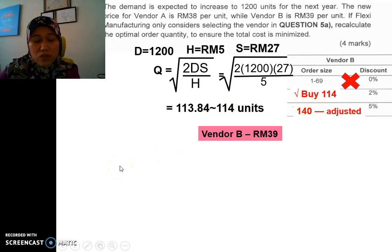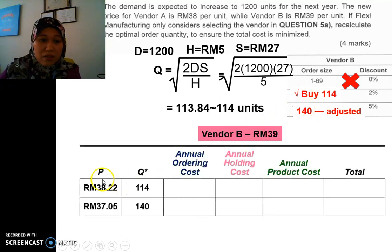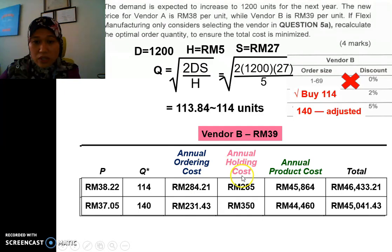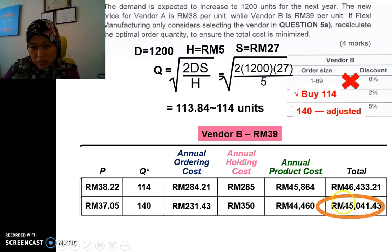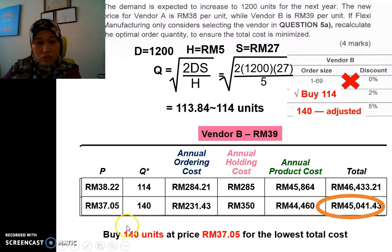And now I need to calculate the total cost for these two. Remember, we have changed the price to 39. So we need to do some discount here. So 2% of 39, we have 38 ringgit 22 cents. And then 5% of 39, we have 37 ringgit 5 cents. And remember the Q that we have decided. So the first one, we buy 114. And then the second one, we adjust to 140. And again, we're going to calculate the ordering cost, annual cost, holding cost, product cost. And these are the new total costs. For this case, the lowest one is this one. And we need to summarize in which buy 140 units at the price of 37 ringgit 5 cents for the total lowest cost.